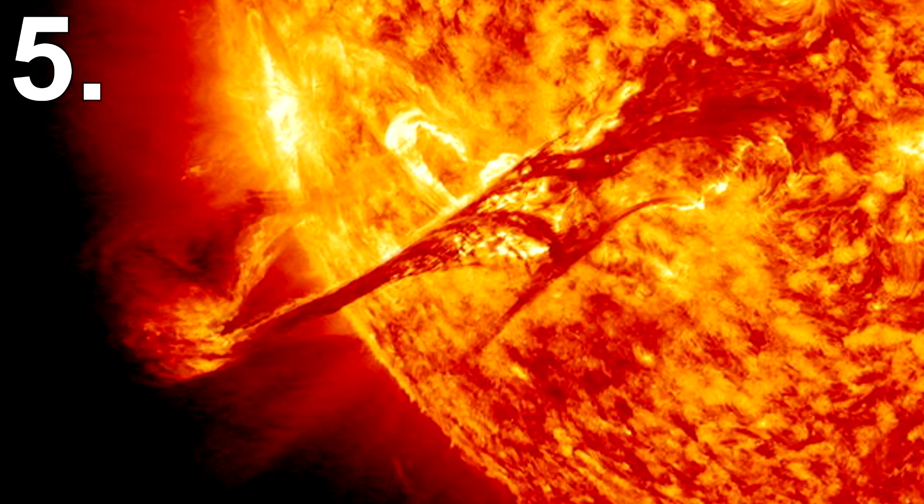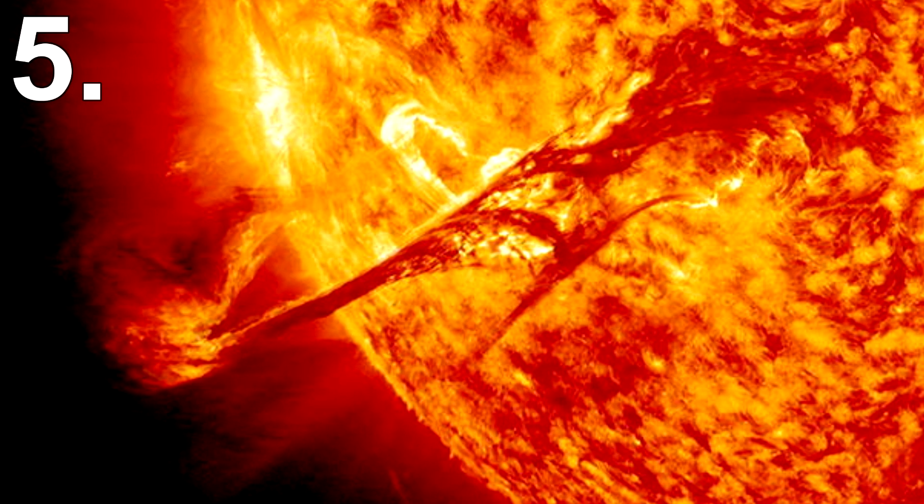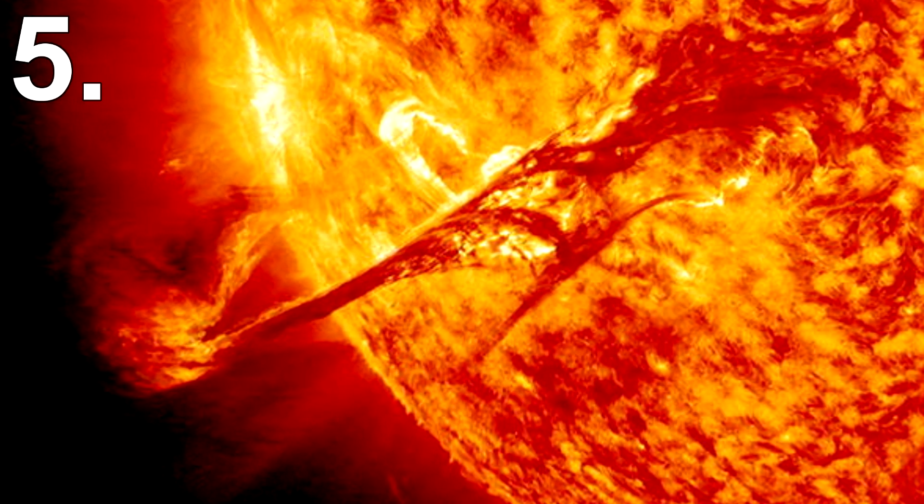Number 5. The sun will expand. When the sun finally dies it will first start to expand. This may seem weird considering you'd expect the sun to just burn out and disappear. However what's happening is that it's turning into a red giant.